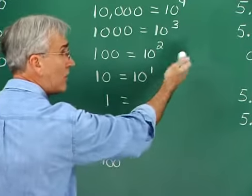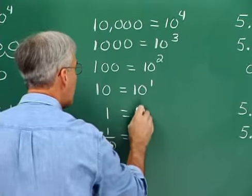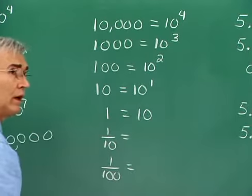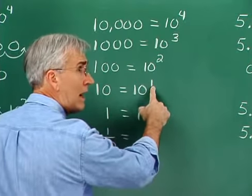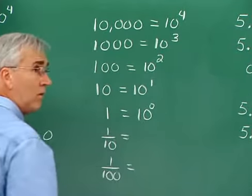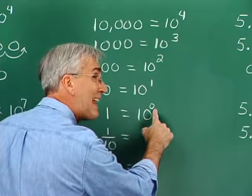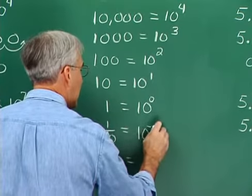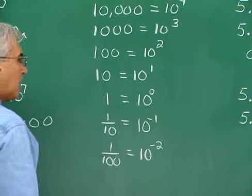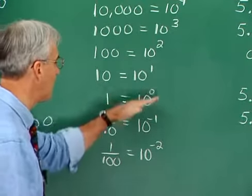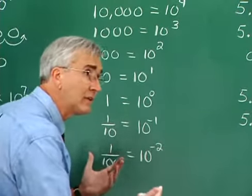What about the pattern with the exponents? We have 4, 3, 2, 1 — the exponent on ten is just decreasing by one each time. Decreasing by one: 1 minus 1 would be ten to the zero. And one less than zero is negative one. Then one less than that is negative two. So it turns out that negative exponents are possible, and this is what they mean when they apply to ten.